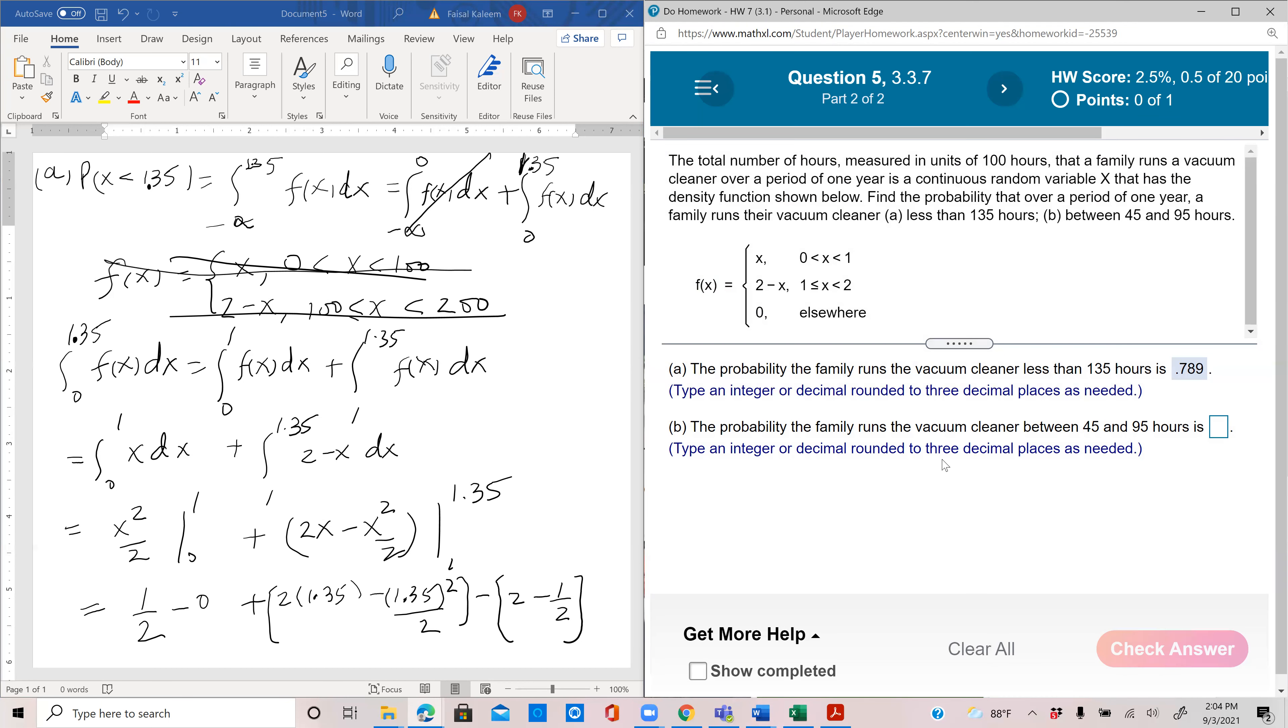Find the probability the family runs the vacuum cleaner between 45 and 95 hours. Let's do a new page.